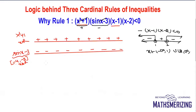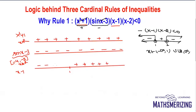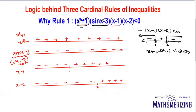Now x minus 1: the expression changes sign at x equal to 1. When x is greater than 1 it will be positive, and when x is less than 1 it will be negative. Similarly, x minus 2 changes sign at 2 — when x is greater than 2 it is positive, and when x is less than 2 it is negative.